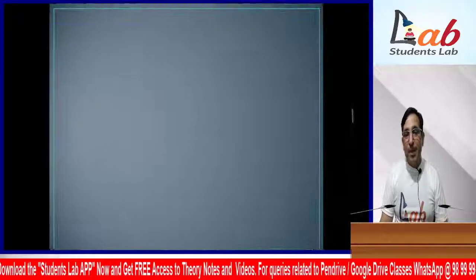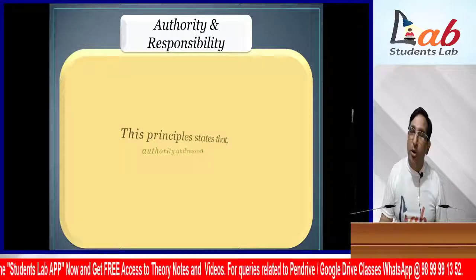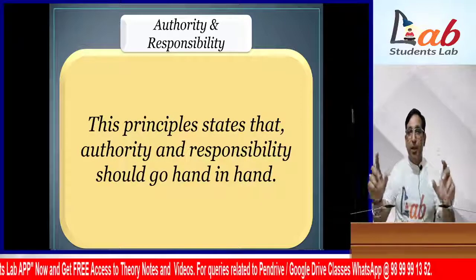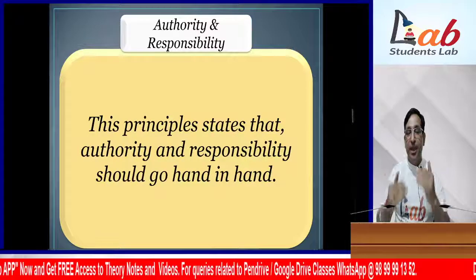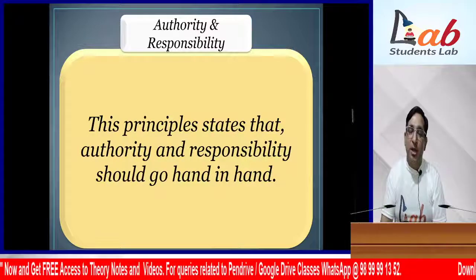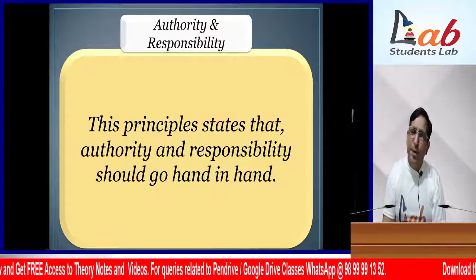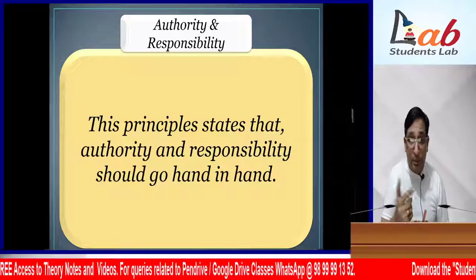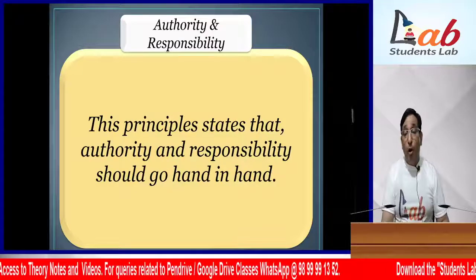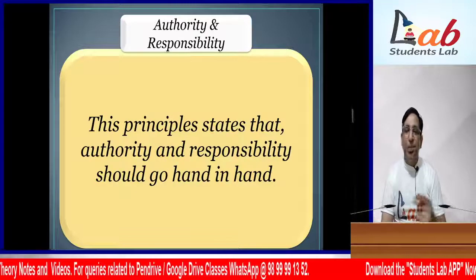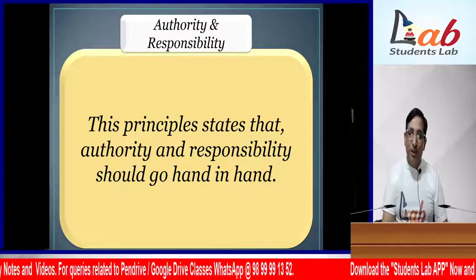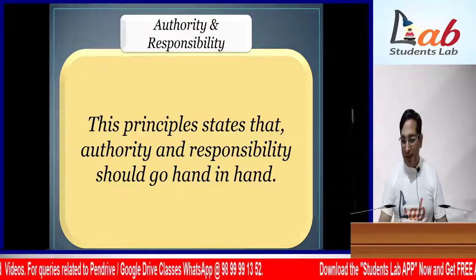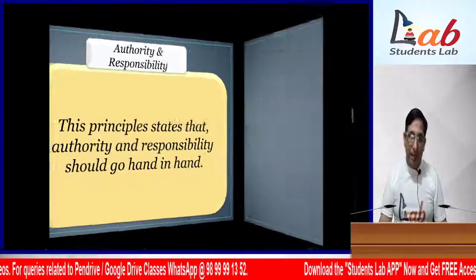The next principle given by Fayol was Authority and Responsibility - meaning there should be a balance between authority and responsibility. If authority is too much, it will be misused. If responsibility is too much, the work won't get done. So there should be a balance between the two.